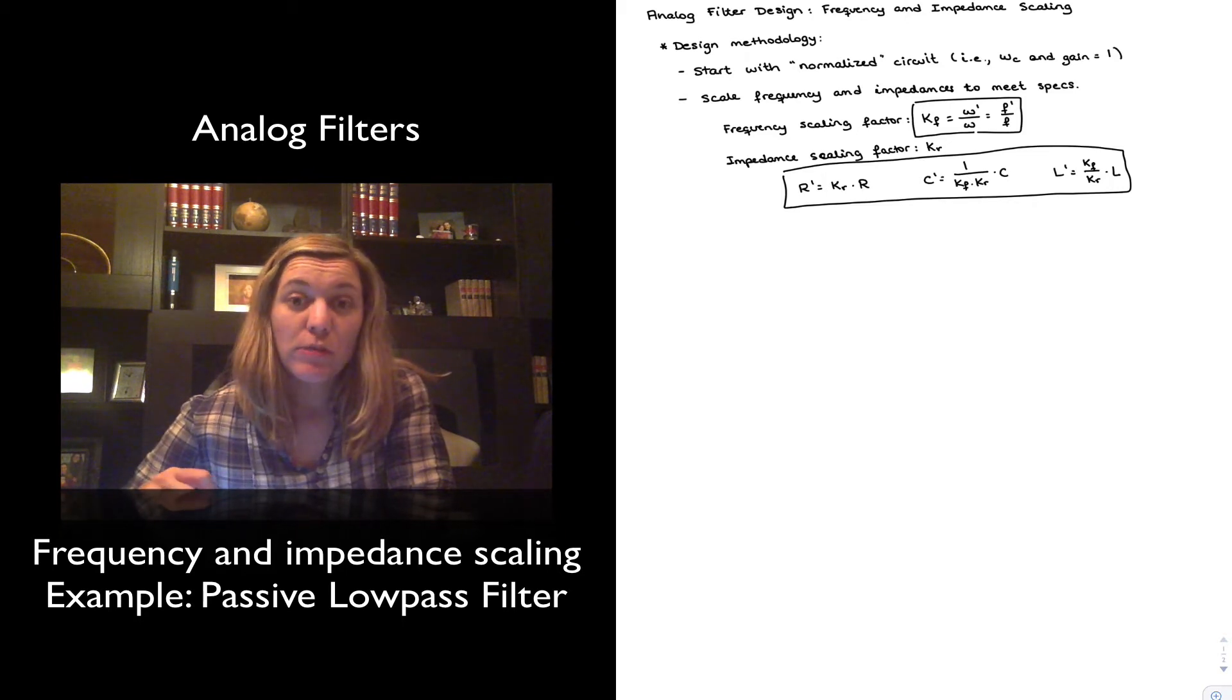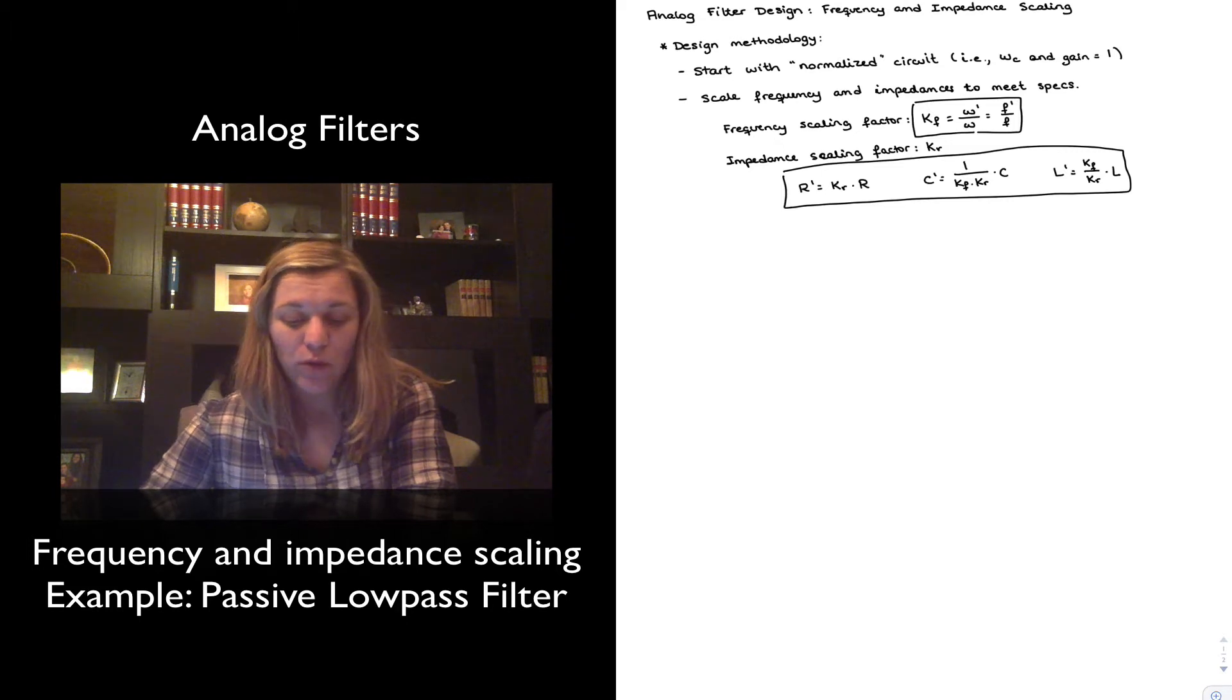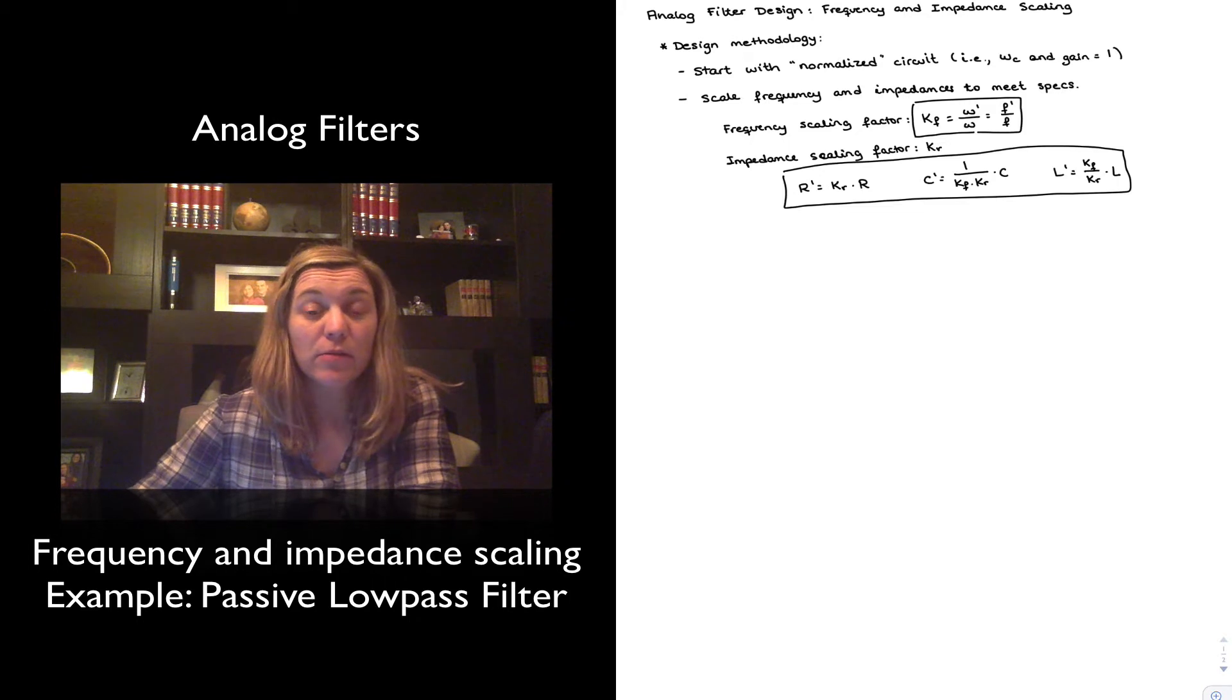So the design methodology basically consists of two steps which I have written here. One is we start with a normalized circuit, meaning a circuit where both the gain and the cutoff frequency are equal to 1, and then we scale the frequency and the impedances in the circuit to meet our desired specs, our specific cutoff frequency, our specific gain.